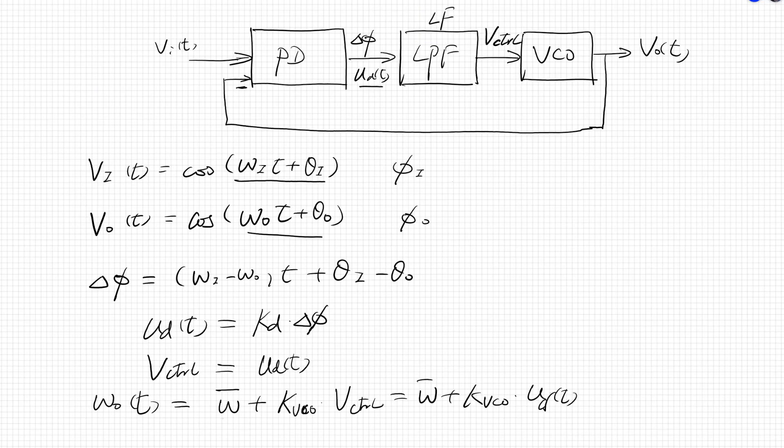If the phase error delta phi was not initially zero, the phase detector would develop a non-zero output signal U D. This would cause the VCO to change its operating frequency in such a way that the phase error finally vanishes.